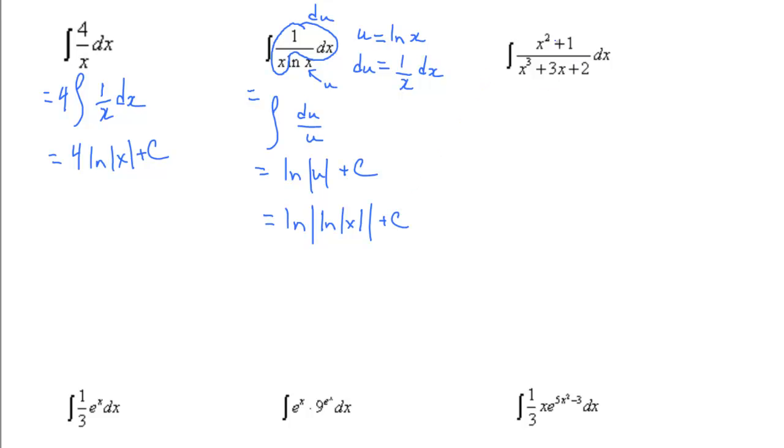This example has x to the power of 3 in the denominator, x to the power of 2 in the numerator. If we look at the derivative, we get 3x squared plus 3. Here we have x squared plus 1, which is simply a multiple of the derivative in the bottom.